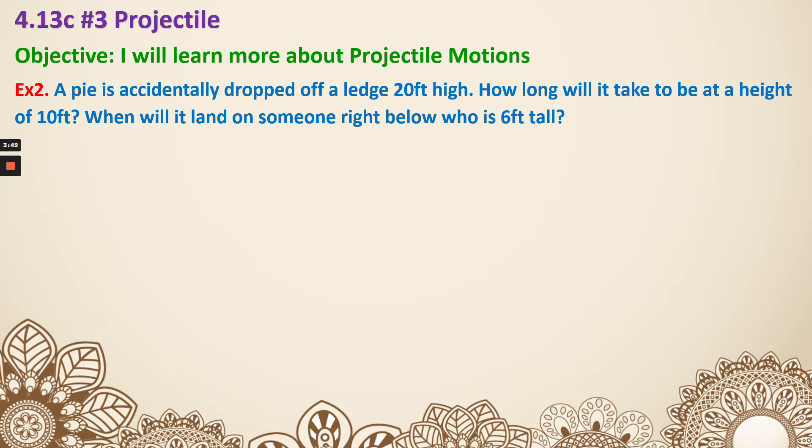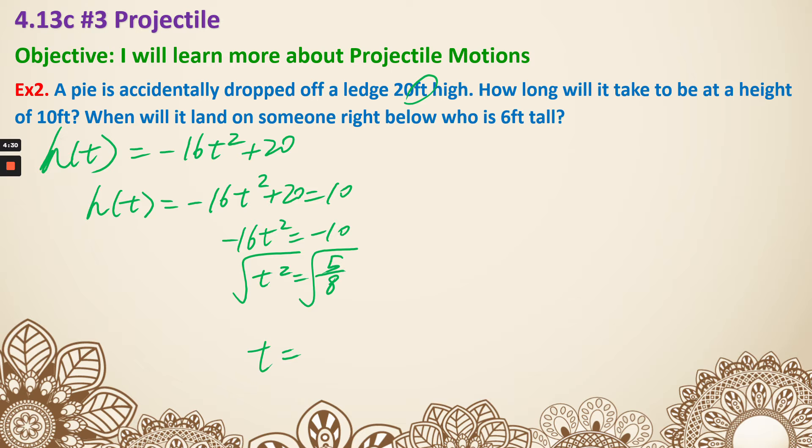Example 2, a pie is accidentally dropped off a ledge 20 feet high. So, h(t), it didn't say anything about initial velocity, that means it's just dropping from 0. And it's about feet, so it's negative 16t squared, but there's no initial velocity, so 0t, then at the end plus 20. First, it's asking how long it would take to be at a height of 10 feet. So I just need to set this to 10, then I can solve. Negative 16t squared is negative 10, so t squared is 5 over 8. I'm going to take square root, but I can't have a negative time, so I don't even need to worry about the negative one. So it's just going to be 0.79 seconds.